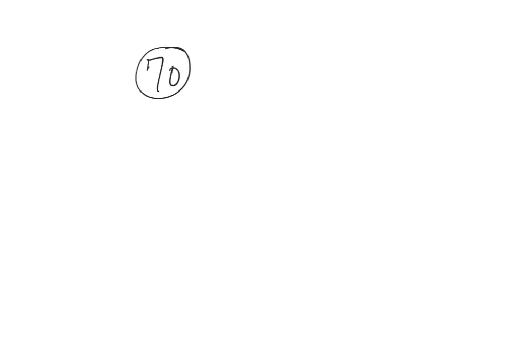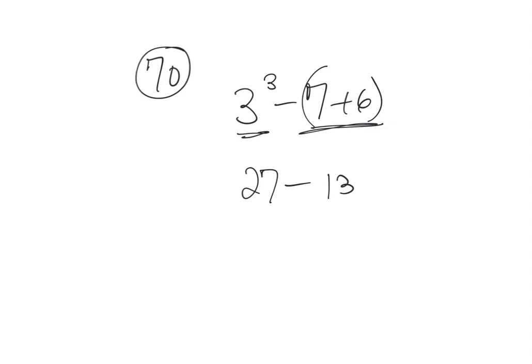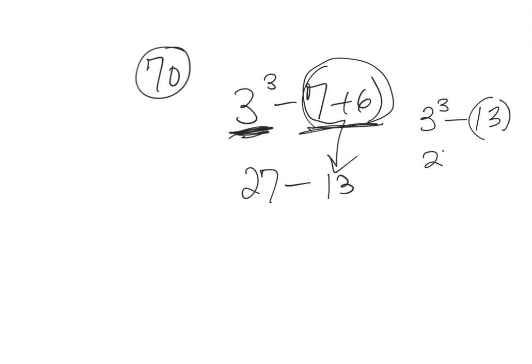Number seventy: three cubed minus the quantity seven plus six. Three cubed is three times three times three, which is twenty-seven. Seven plus six is thirteen — those are two independent operations. Then twenty-seven minus thirteen gives a final answer of fourteen. Note that the exponent and the parentheses can be resolved independently since they don't affect each other.